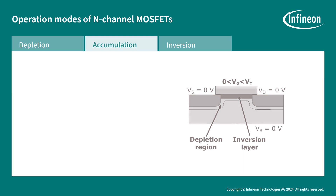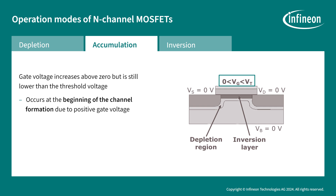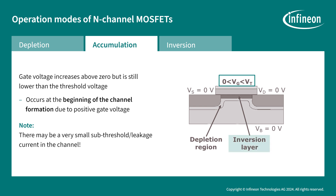The accumulation mode happens when the gate voltage increases above zero but is still lower than the threshold voltage. This occurs at the beginning of the channel formation due to the positive gate voltage, and there may be a very small sub-threshold or leakage current occurring in the channel. An inversion layer begins to form where the polarity of the P substrate under the gate starts changing.